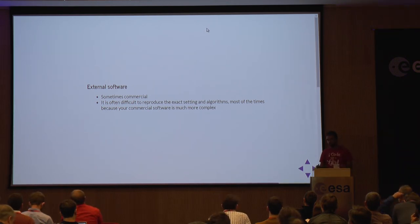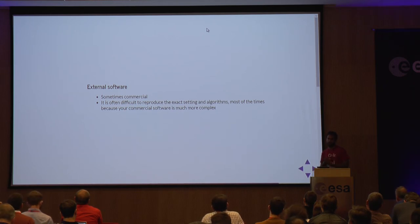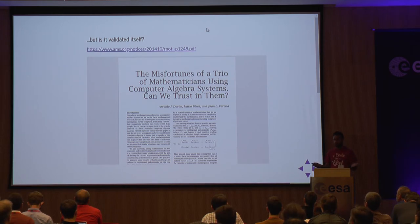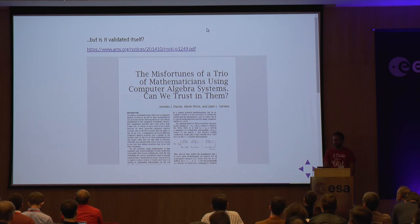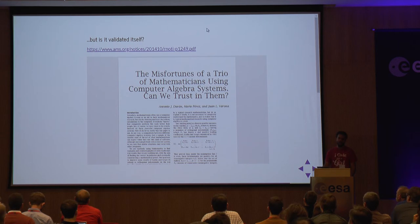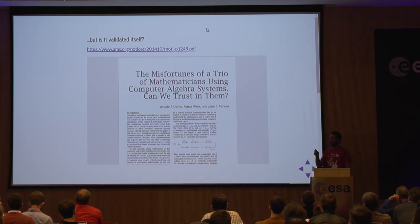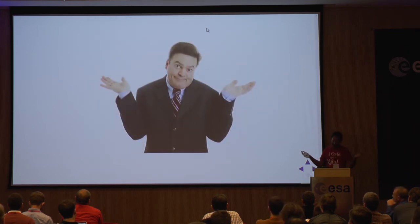Using external software for validation has its own problems. Some is commercial, so installing it — like STK on a virtual machine with Windows — is a pain. Sometimes the external software is so complex or different that it's not easy to generate exactly the case you want to validate. And sometimes the external software itself is not validated. There's a paper where mathematicians found a bug in Mathematica or Maple that was doing eigenvalue decomposition the wrong way, discovered after months of investigation — and since it's closed source, there's no way to find and fix the error.